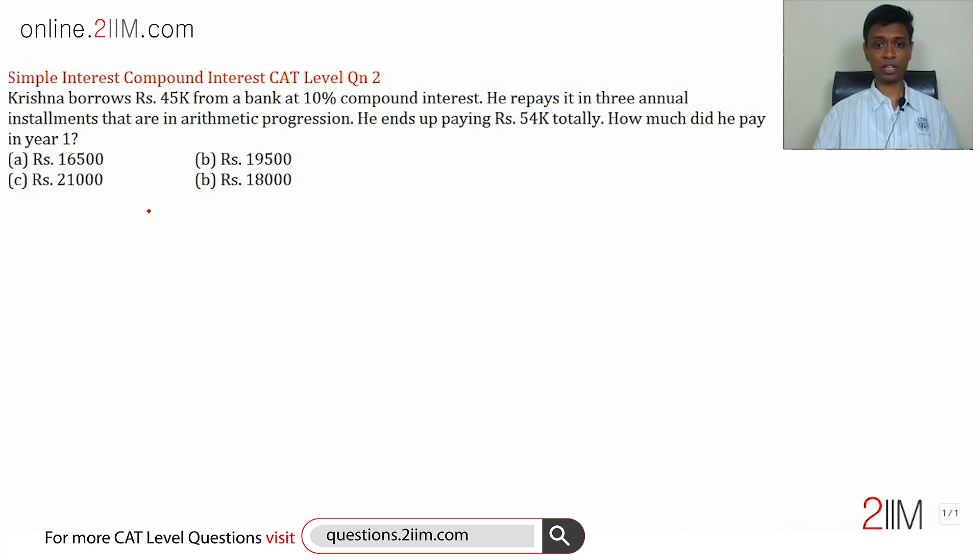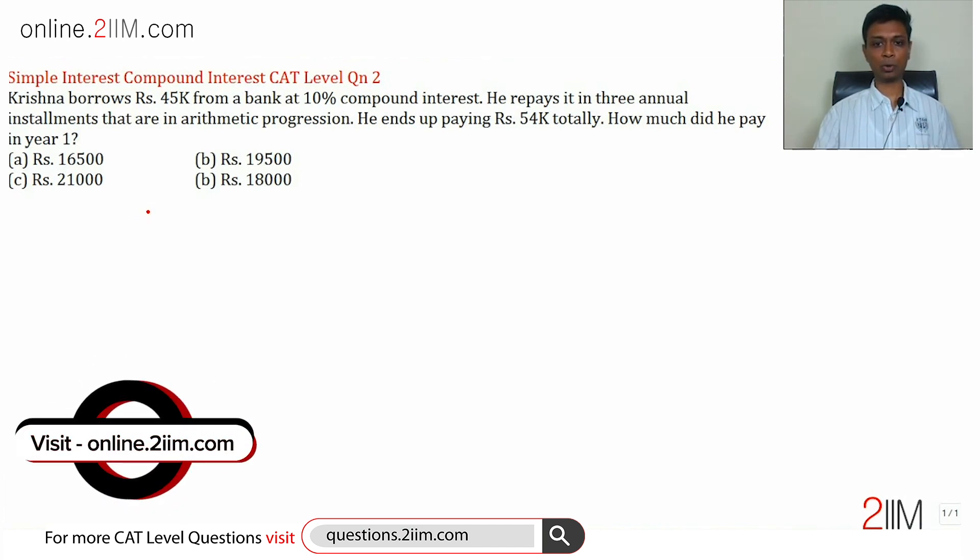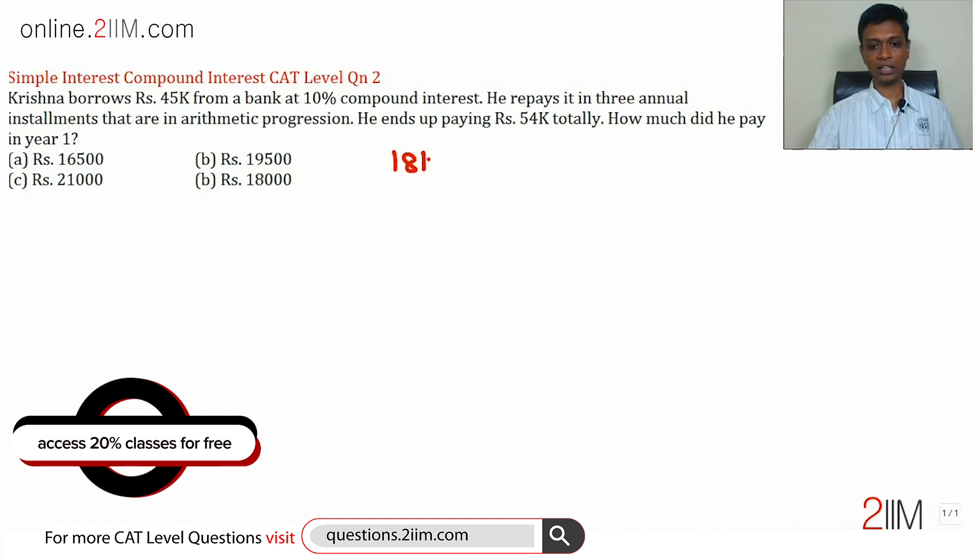Forget about all that—three terms in AP that add up to 54,000. What does that tell you? It's a very crucial idea. Three terms in arithmetic progression adding up to 54,000—straight away I can say the terms are 18k in the middle, 18k minus D, and 18k plus D.